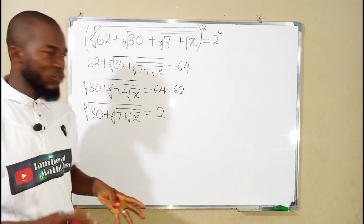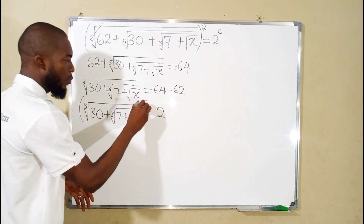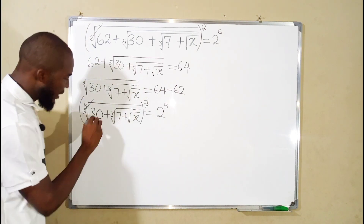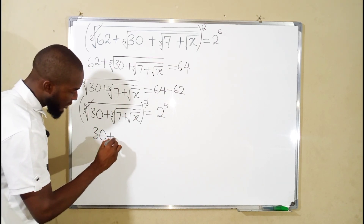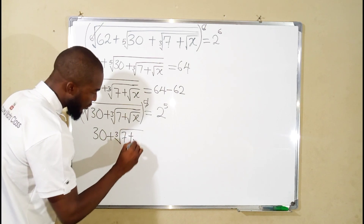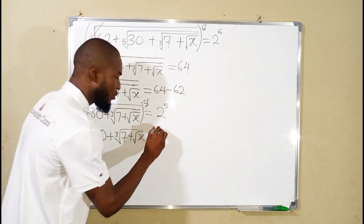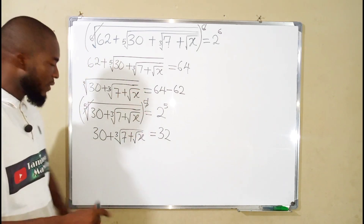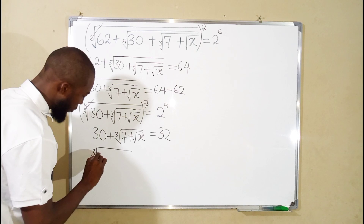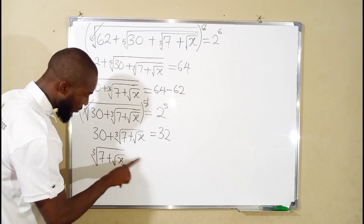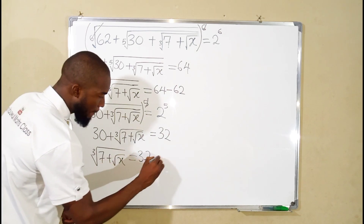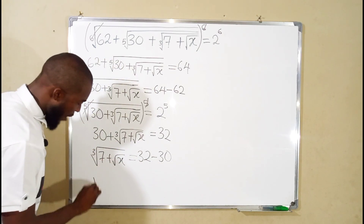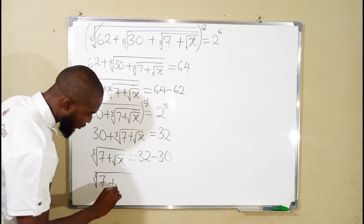Now the outermost root is the fifth root, so we take the power of 5 from both sides. This power of 5 will cancel the fifth root, leaving 30 plus the cube root of 7 plus the square root of X on the left, and 2 to the power of 5 equals 32 on the right. Bringing the real numbers together, we have the cube root of (7 plus square root of X) on the left, and 32 minus 30 on the right, which gives us the cube root of (7 plus square root of X) equals 2.